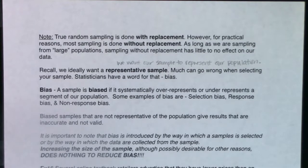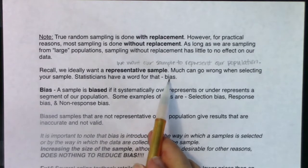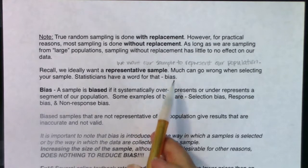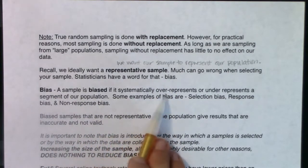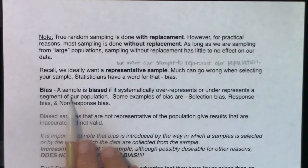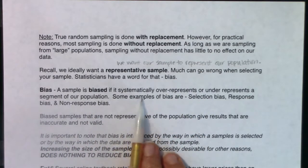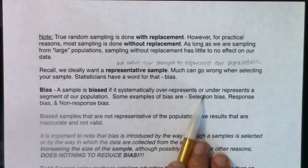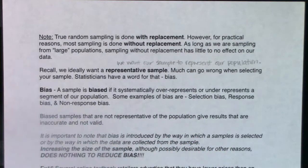So much can go wrong when you're selecting your sample, and we have a word for that — it's called bias. A sample is biased if it systematically over-represents or under-represents a segment of our population. Some examples of bias are selection bias, response bias, and non-response bias.